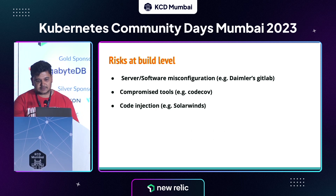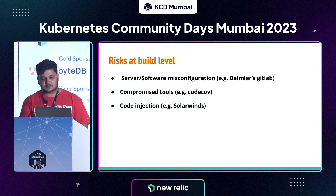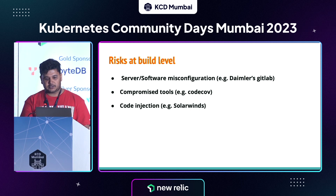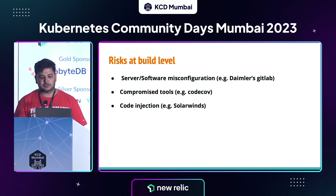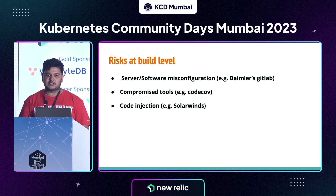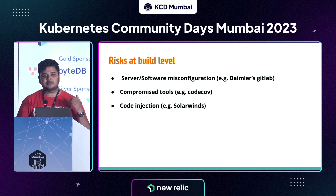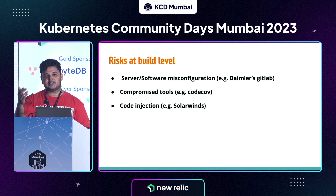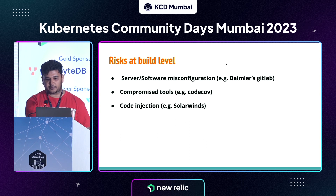The famous SolarWinds attack is an example of code injection. Attackers gained access to the SolarWinds network and planted malicious code in one of their tools, which then made its way to many of their customers including the US government.